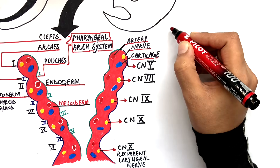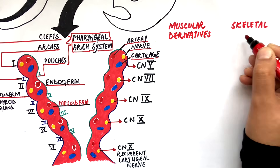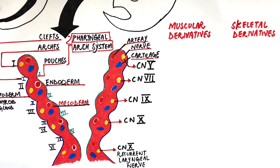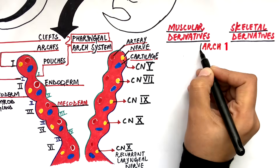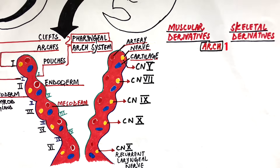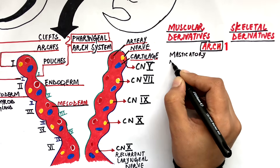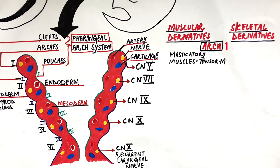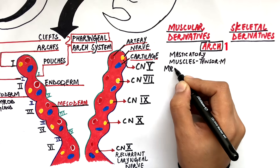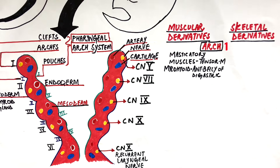Now let's look at the derivatives of the arches. Each arch will have a muscular derivative and a skeletal or cartilaginous derivative. The muscular derivatives of the first arch will be the muscles of mastication, tensor muscles such as tensor tympani and tensor veli palatini, the mylohyoid muscle and the anterior belly of the digastric.